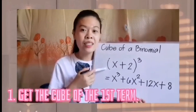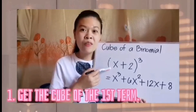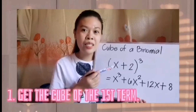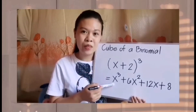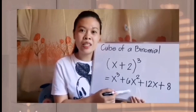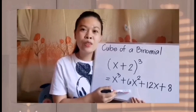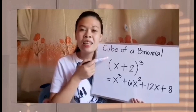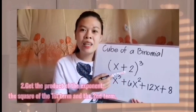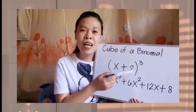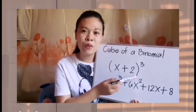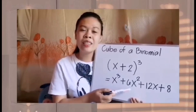The first step is to get the cube of the first term. So we will have positive x times positive x times positive x, which gives x cubed. Next, we have positive 6x squared. So all we have to do for the second step is to get the product of the exponent, the square of the first term, and the second term. To do that, we will have 3 times positive x times positive x times positive 2, which equals 6x squared.